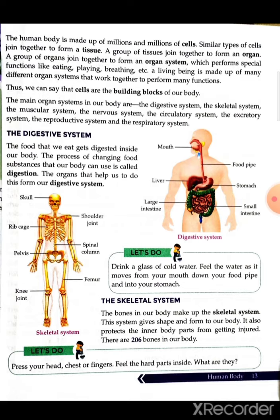The next important system is the skeletal system. The bones in our body make up the skeletal system. This system gives shape to our body and also protects the inner body parts from getting injured. There are a total of 206 bones in our body. The skull, shoulder joint, rib cage, pelvis, spinal column, femur bone, and knee joint — all these bones and joints together form the skeletal system.